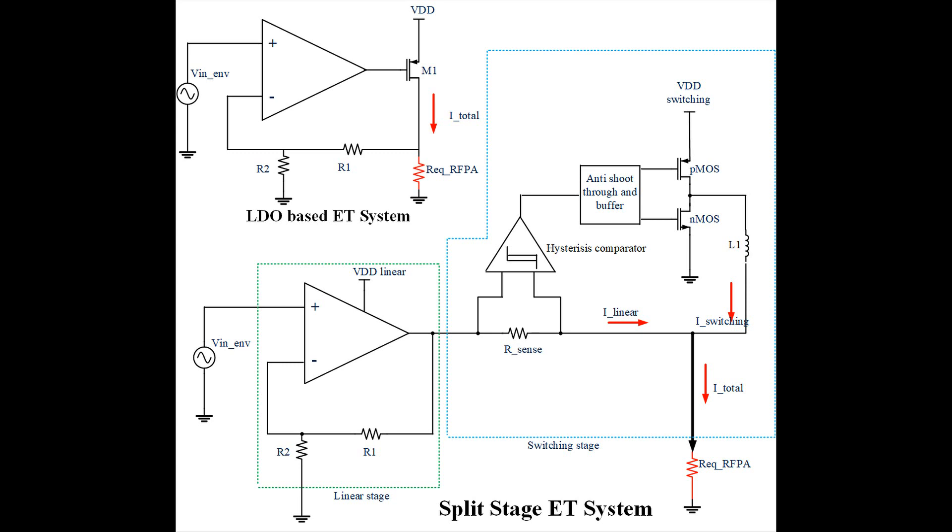The split stage envelope tracker is the evolution of the LDO based tracker. As you can see, half of it is exactly same as the LDO based tracker, but it has some other blocks which are like the hysteresis comparator, the anti-shoot block, the power transistors, and then it connects down to the power amplifier.